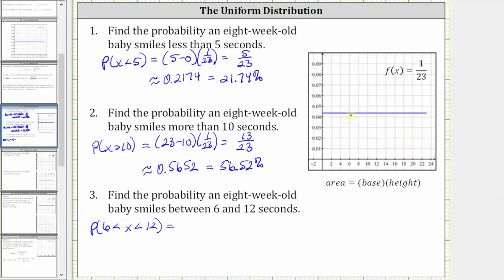x equals 6 is here. x equals 12 is here. The probability is equal to the area of this red rectangle.